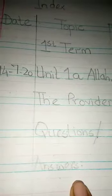After topic we are going to write first term. After that write serial number 1. Today is 14th July 2020. Unit number 1A, Allah the provider. And in this topic what we are going to do today. Today we are going to do question answers.